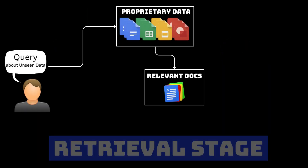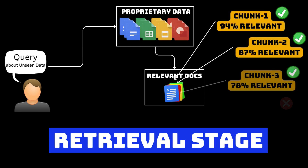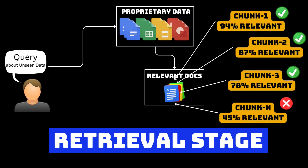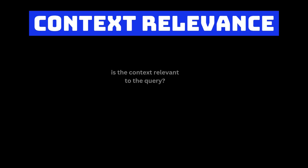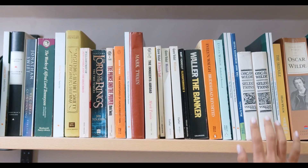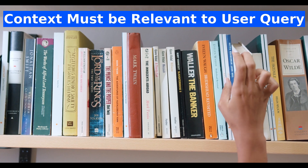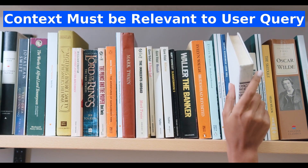The first stage in any RAG application is retrieval. To check the quality of the retrieval stage, we want to make sure that each chunk of context is relevant to the input user query. As part of context relevance, we evaluate the quality and relevancy of this retrieved context. This is crucial because the context will be used by the LLM to generate answers, and the presence of any irrelevant information could introduce hallucinations.